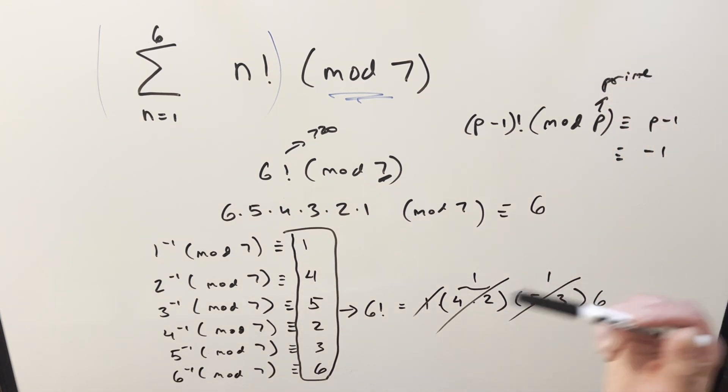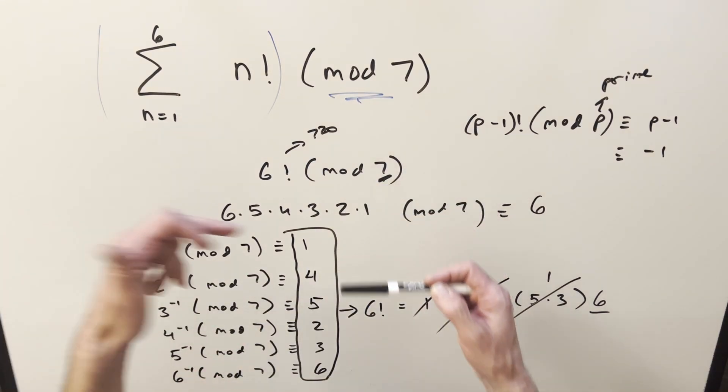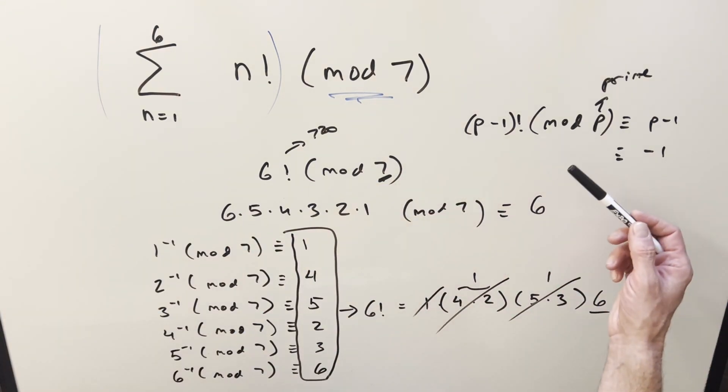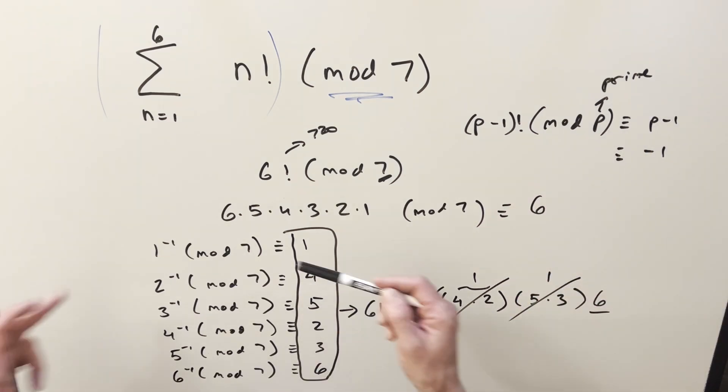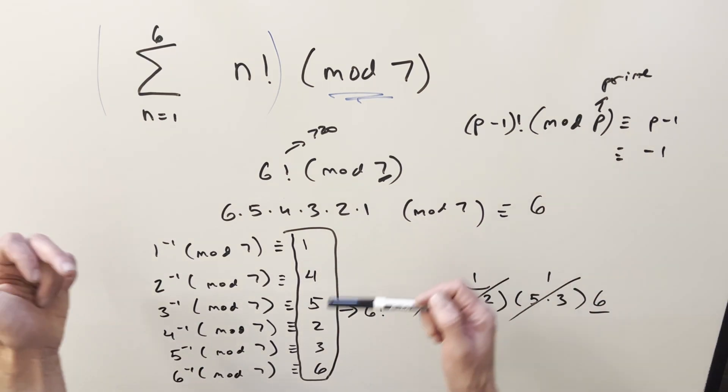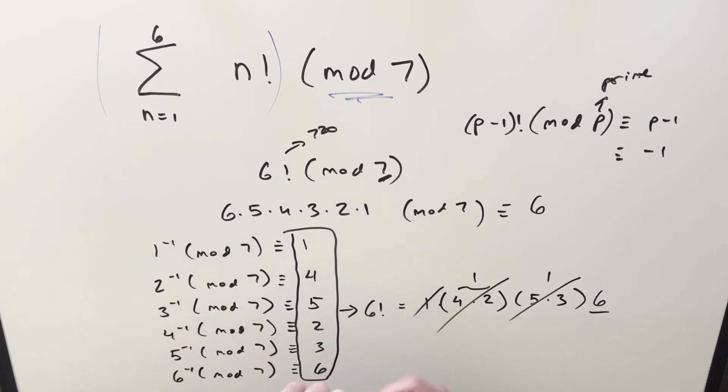But the theorem is usually stated the other way stating that when you have this then p is a prime but it also works the other way to say when we have this situation in p is a prime we can do what we just did here. So instead of doing this all out just knowing the theorem you would just go immediately and say this thing is going to be 6 or minus 1.